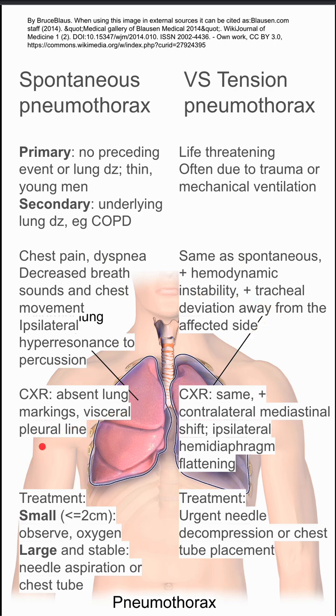On chest x-ray, a spontaneous pneumothorax will have absent lung markings and a visceral pleural line. Tension pneumothorax will have the same chest x-ray findings, plus a contralateral mediastinal shift and ipsilateral hemidiaphragm flattening due to the high pressure.